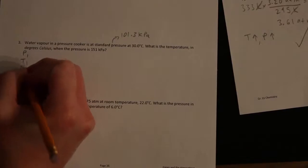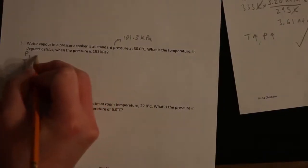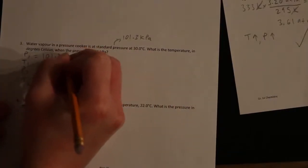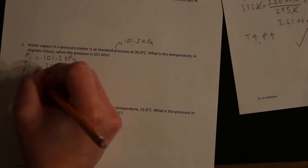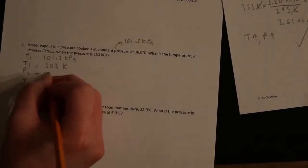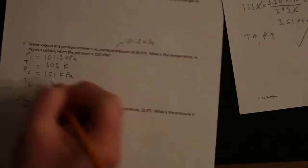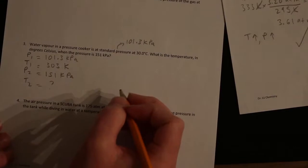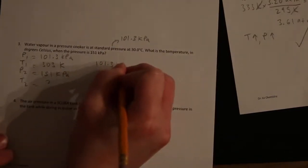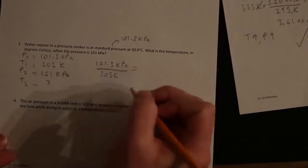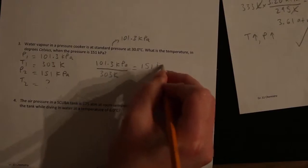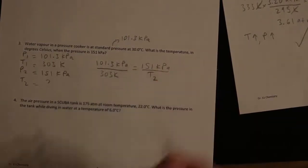We need to convert all of our temperatures to Kelvin. P1, T1, P2, T2. Our initial pressure is standard pressure, which is 101.3 kilopascals. Initial temperature is 30 Celsius. To get that to Kelvin we add 273. That gives us 303 Kelvin. P2 is 151 kilopascals. We're trying to find T2. Let's set up our proportion. P1 over T1: 101.3 kilopascals divided by 303 Kelvin equals P2, 151 kilopascals, divided by T2, which we're trying to find.